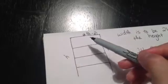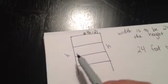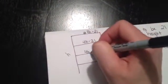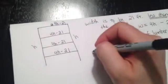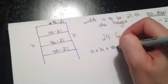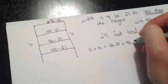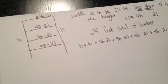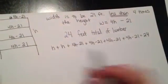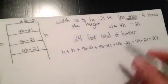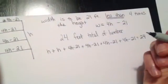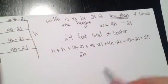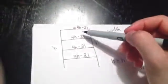Now I know that this piece, this piece, this piece, and this piece all have to be the same length because they're the same distance apart. So I'm going to rewrite that same equation for each shelf. I could say H plus H plus 4H minus 21 plus 4H minus 21 plus 4H minus 21 plus 4H minus 21 plus 4H minus 21 equals 24, but that's a really long equation. An easier way is to use the distributive property. So I'm going to say 2H, because I have two H's, plus — and this 4H minus 21 appears four times.